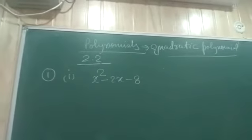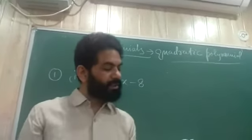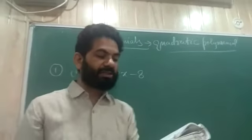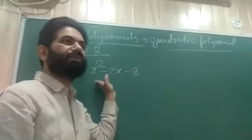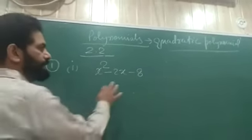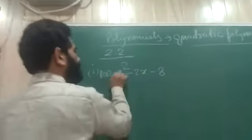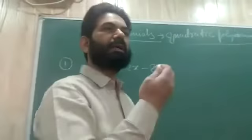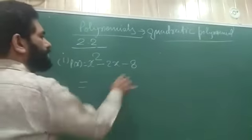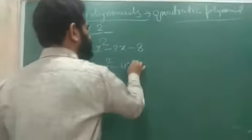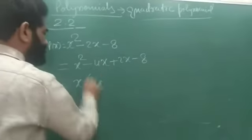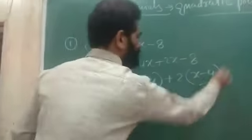The question asks: find the zeros of the following quadratic polynomial and verify the relationship between the zeros and the coefficients. We need to do two to three things — first find the zeros, then verify the relationship. To solve it, first we will factorize it as we did in Class 9. Factors of 8 that give a difference of 2 are 4 and 2. Taking x common: x(x − 4) + 2(x − 4), giving factors (x − 4)(x + 2).